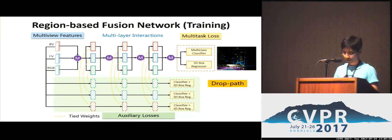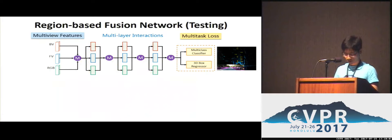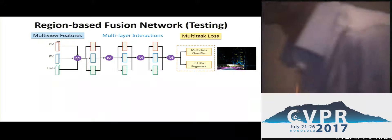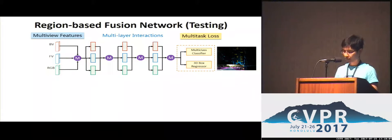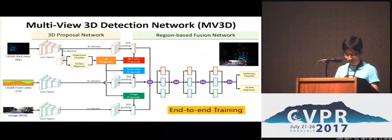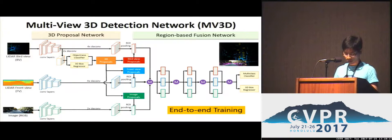During testing, only the main branch is used for prediction. Combined with the 3D proposal network and the region-based fusion network, the whole model is trained in an end-to-end fashion.